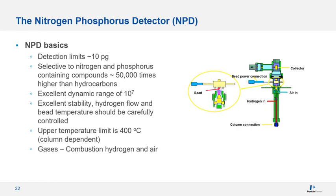The other detector I would like to discuss is the nitrogen phosphorus detector, or NPD. The design is very similar to the FID and belongs to the family of ionizing detectors, but it works on different principles. The NPD is approximately 50,000 times more sensitive to nitrogen- and phosphorus-containing components than to carbon-containing components, making this detector very selective toward nitrogenated and phosphorated compounds.